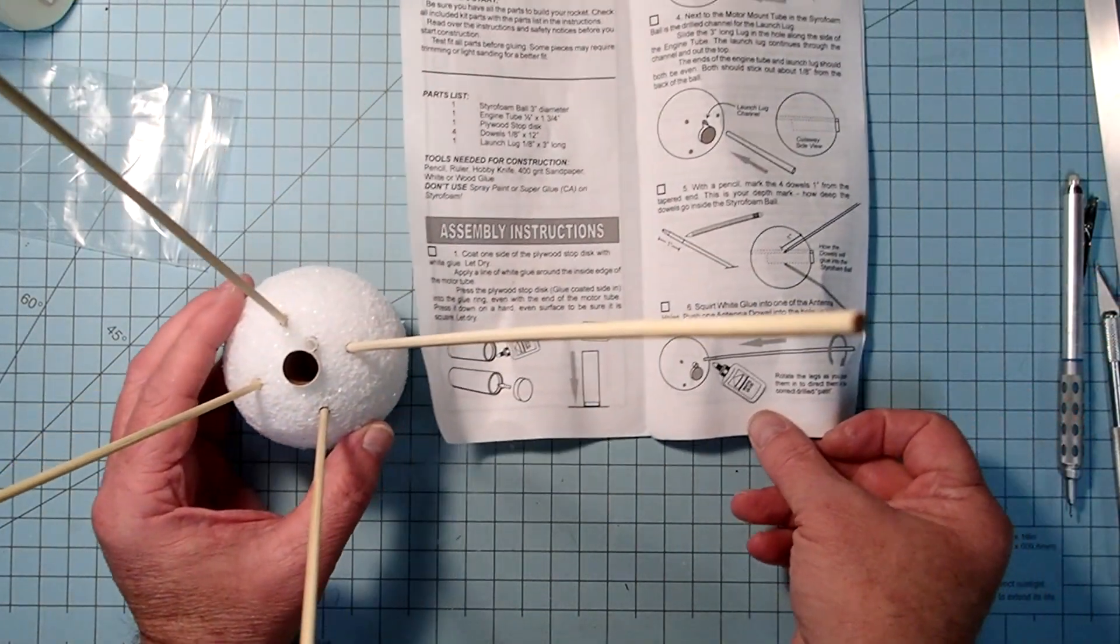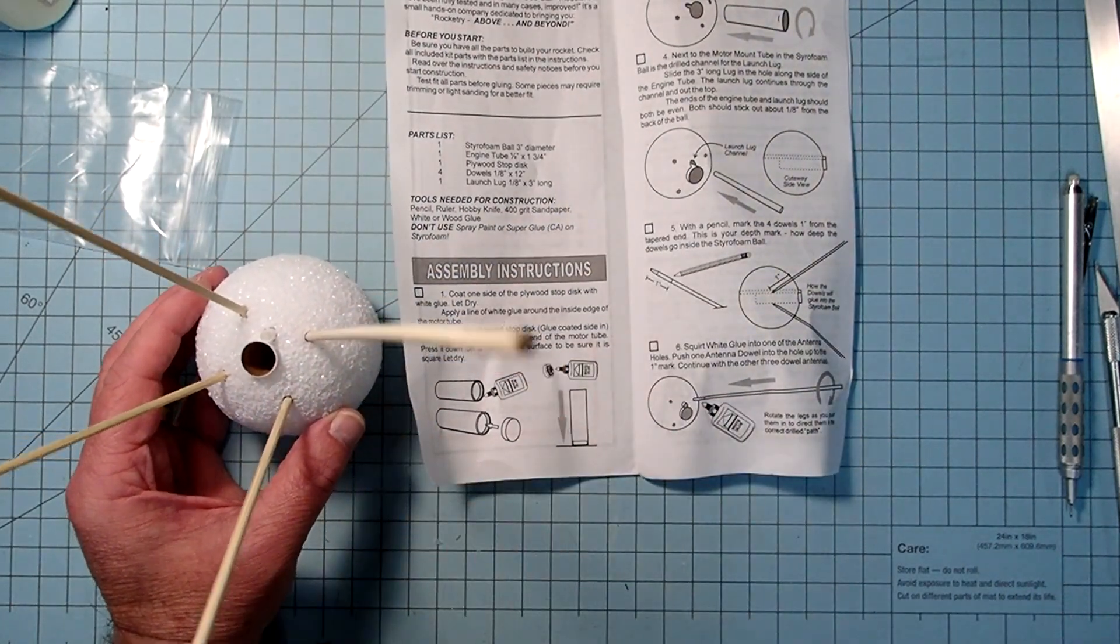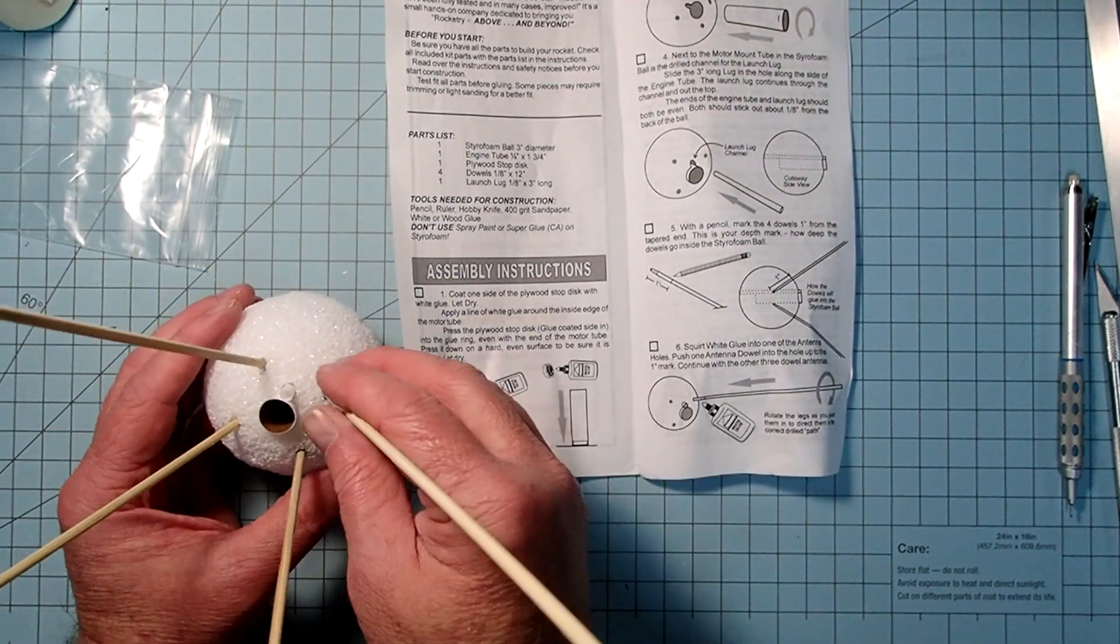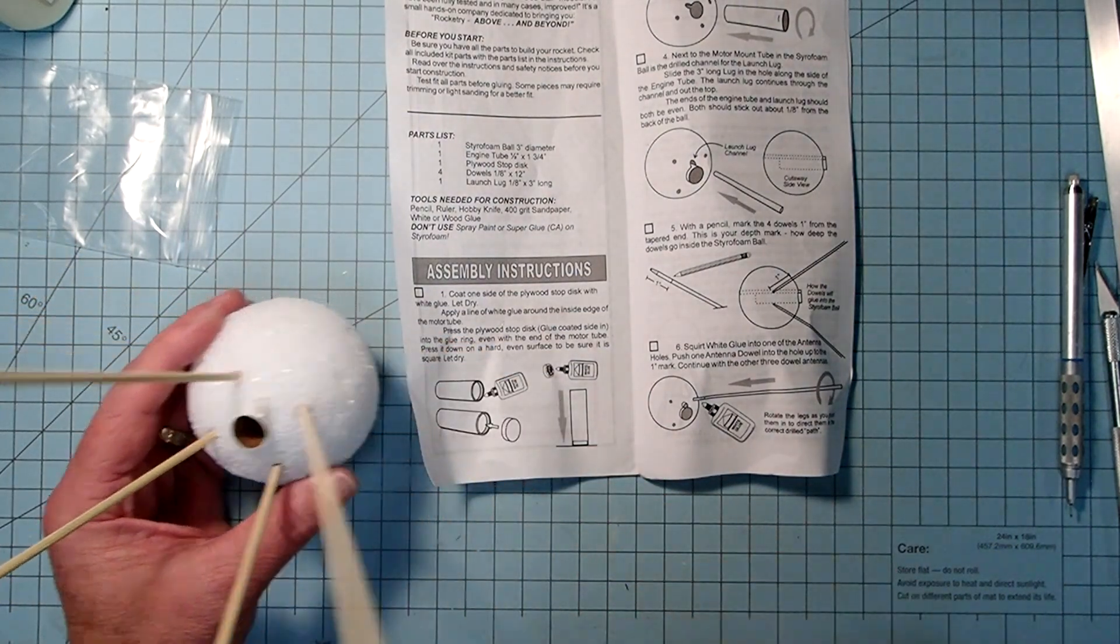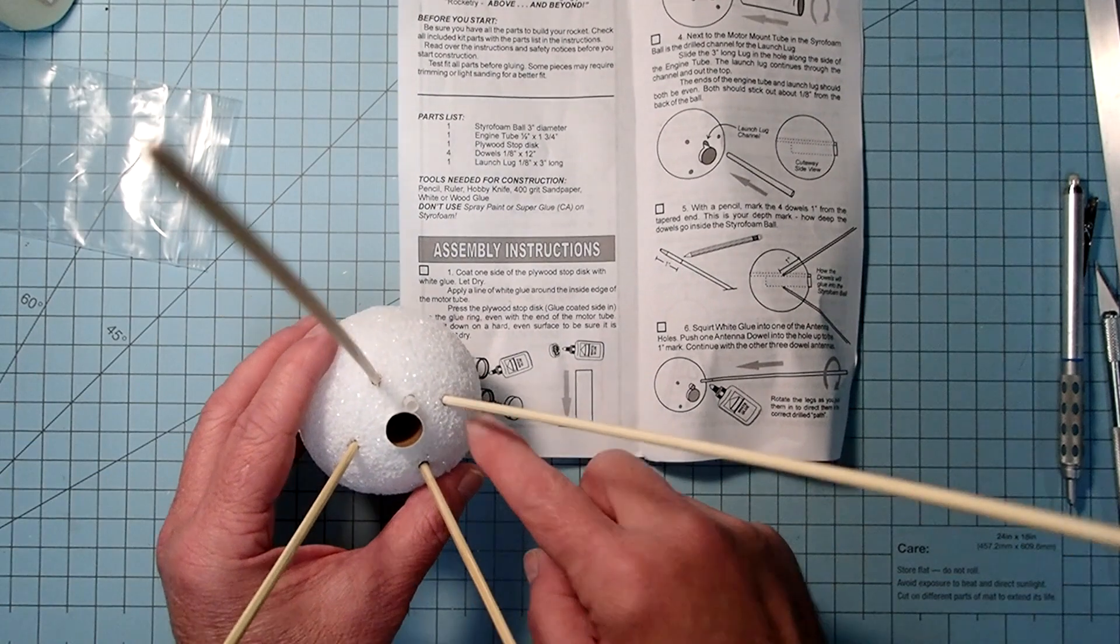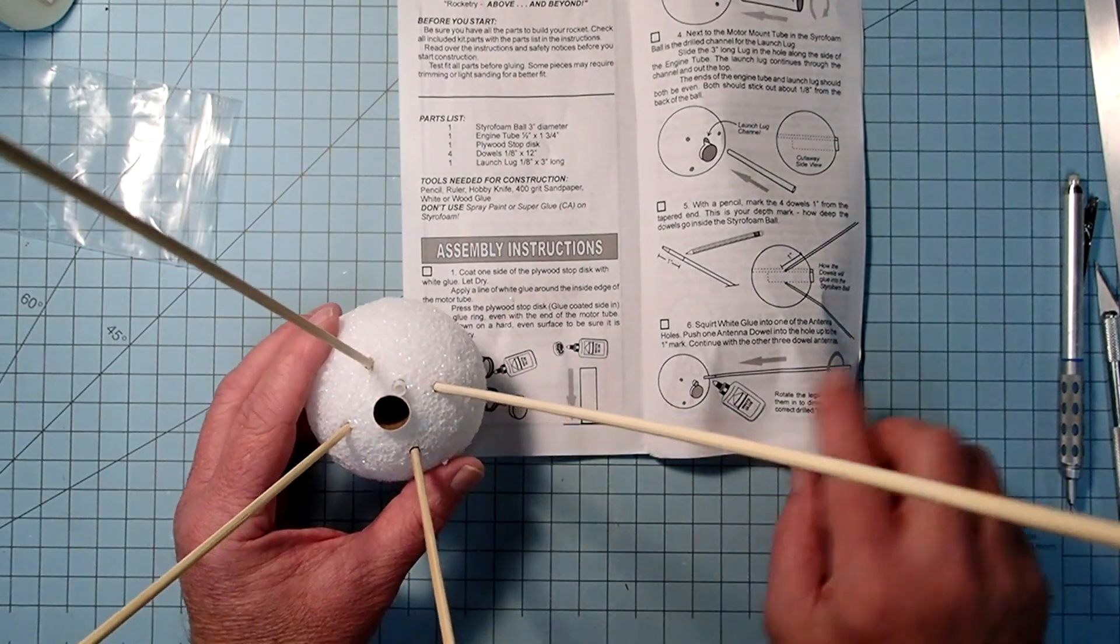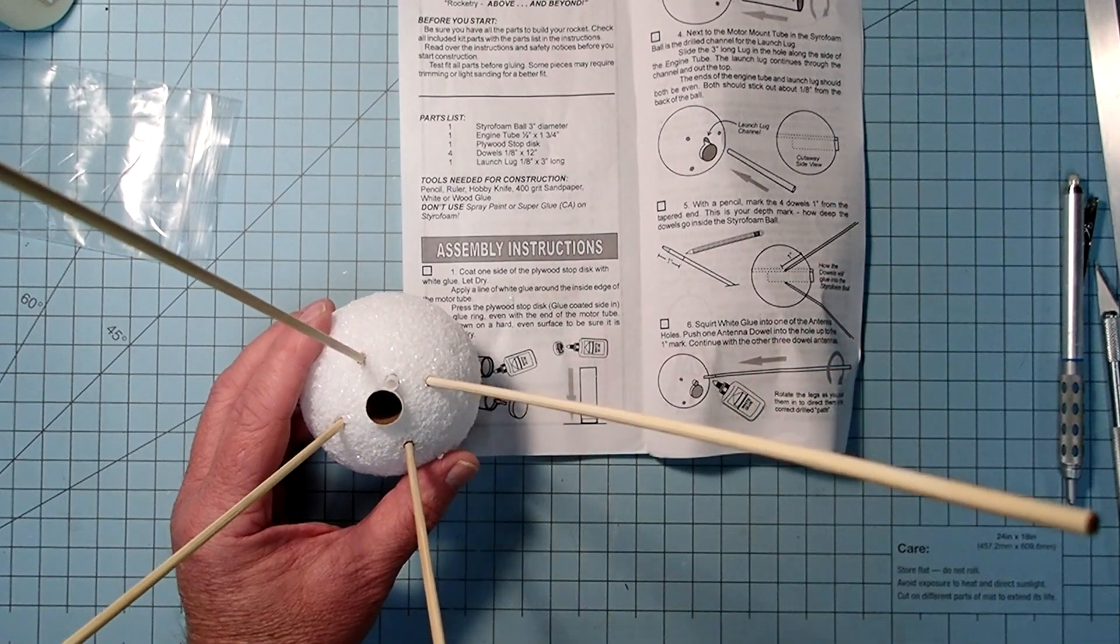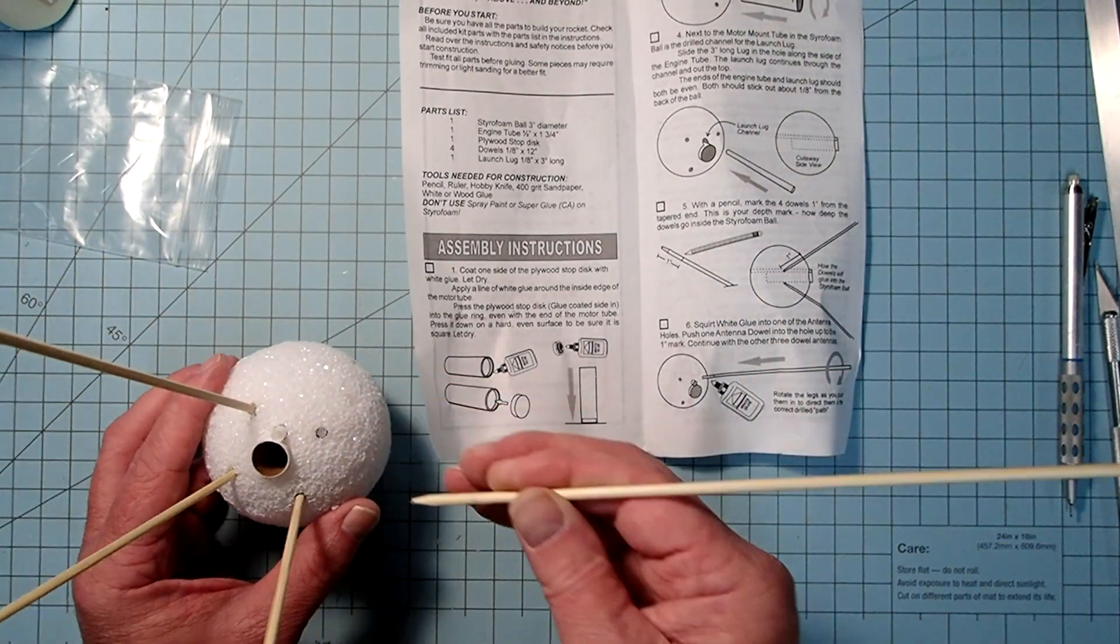Now next it wants us to squirt glue down inside there and then put them back in again. And ideally, these should be getting close to if not right up against the motor mount there. It still has not told us to glue in the motor mount yet. So we're going to go ahead and do the sticks here.